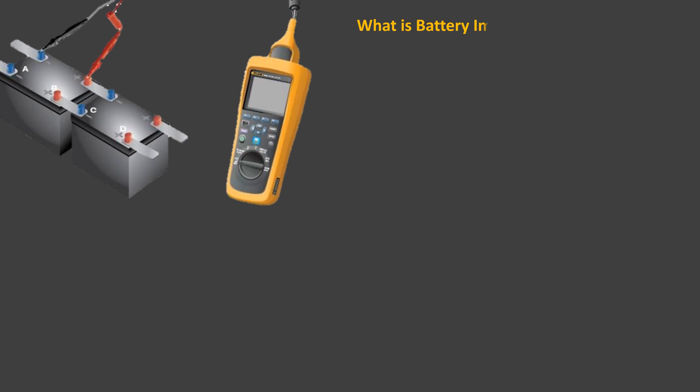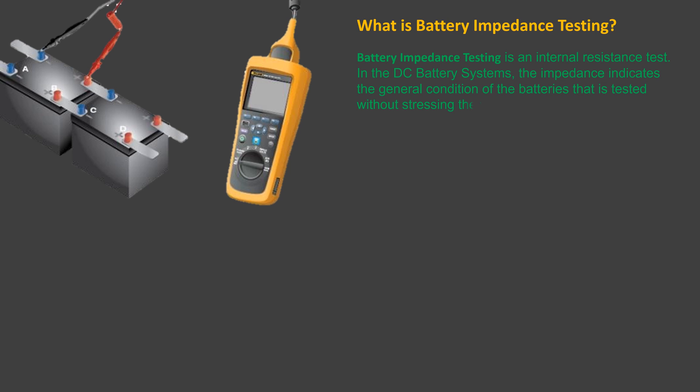What is battery impedance testing? Battery impedance testing is an internal resistance test. In the DC battery system, the impedance indicates the general condition of the batteries that is tested without stressing the whole system and the batteries themselves, because it tests the whole system between two terminal plates of the battery. It is ideal for supporting any weakness in cells.